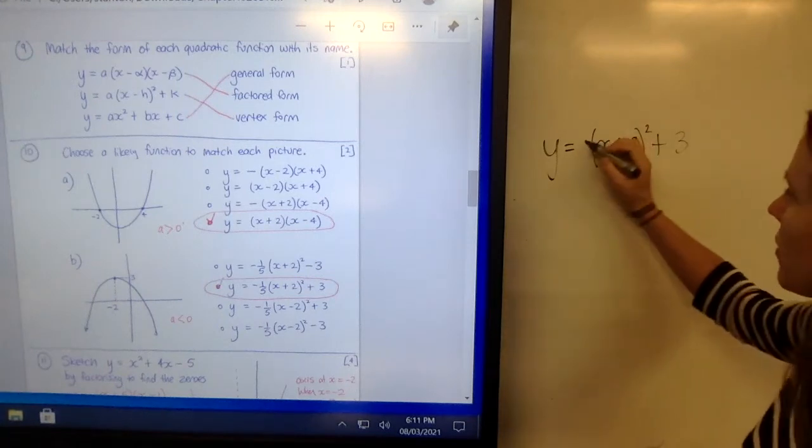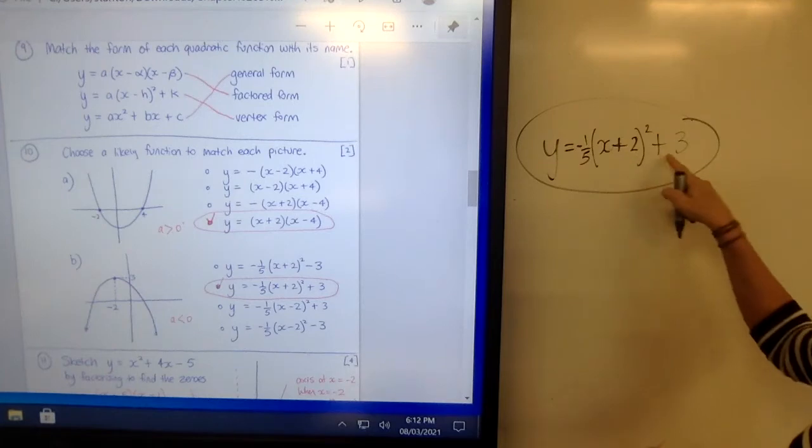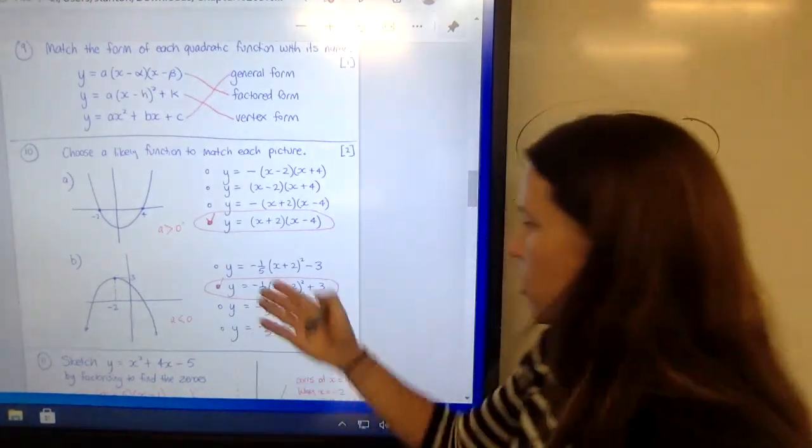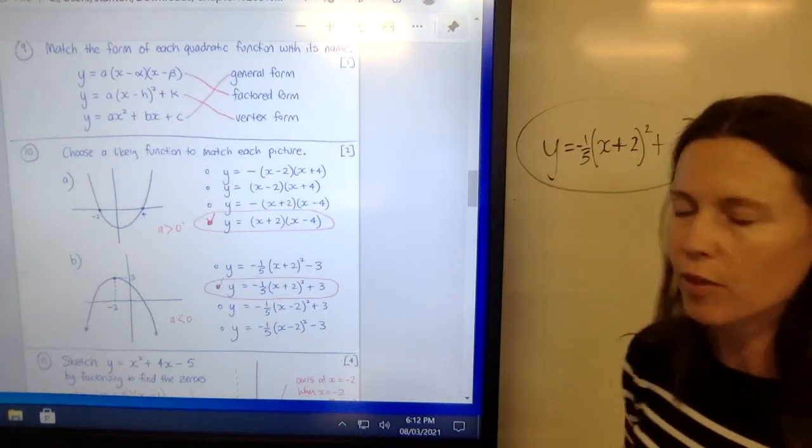So I need one that has, obviously they've all got minus a fifth at the front. I need it to have a plus 2 and a plus 3 to represent this. So this is just checking that you understand that h, k is the vertex in that form.